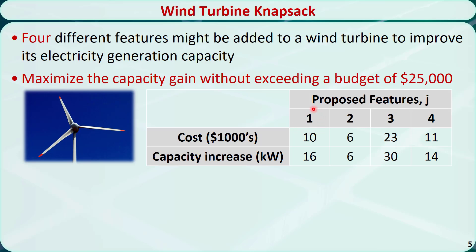If we add feature 1, the related cost would be $10,000, and the capacity can be increased by 16 kW, and so on. The goal is to maximize the capacity gain without exceeding a budget of $25,000.